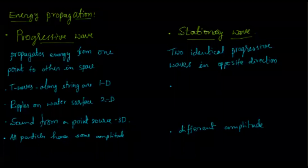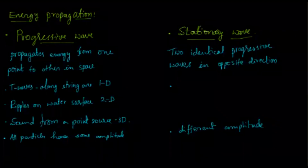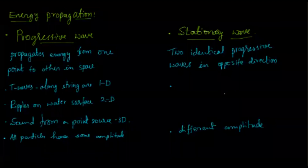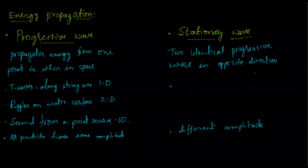In stationary waves, there is no propagation of energy — energy is not transferred from one point to another. The medium vibrates, but there is no propagation of the wave or energy. Stationary waves are obtained by the superposition of two identical progressive waves moving in opposite directions with the same amplitude and frequency. When they superimpose, they produce stationary waves.